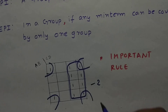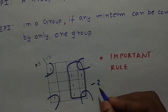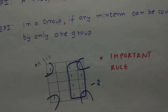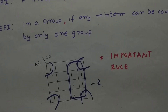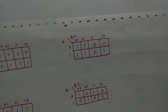So we have two essential prime implicants and two prime implicants. To better understand, let us deal with some more examples to get more clarity on prime implicants and essential prime implicants.